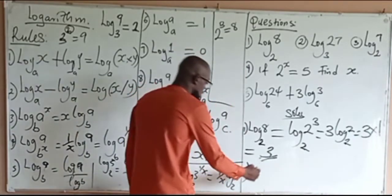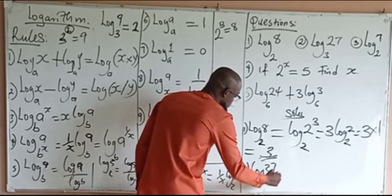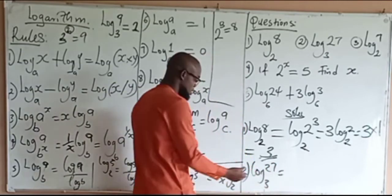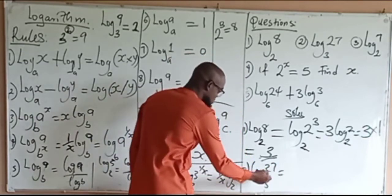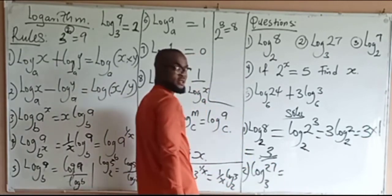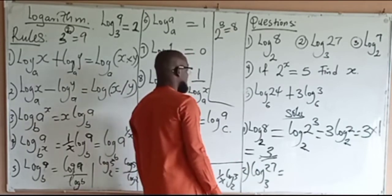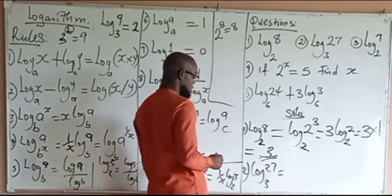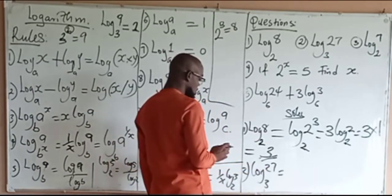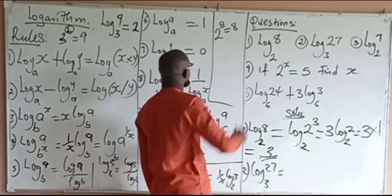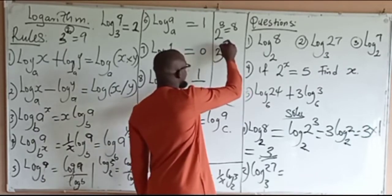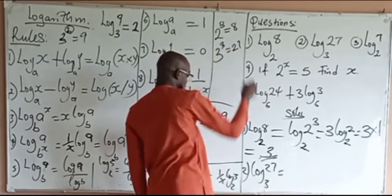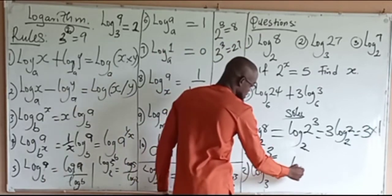Question 2: log 27 to base 3. Can I raise 3 to some power to get 27? Yes — 3 to the power of 3 equals 27. So we rewrite this as log of 3 to the power 3 to base 3.